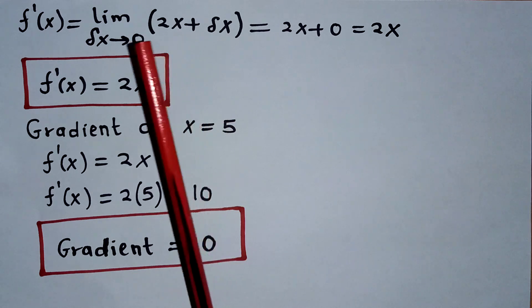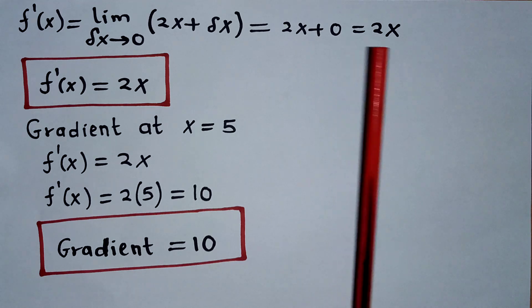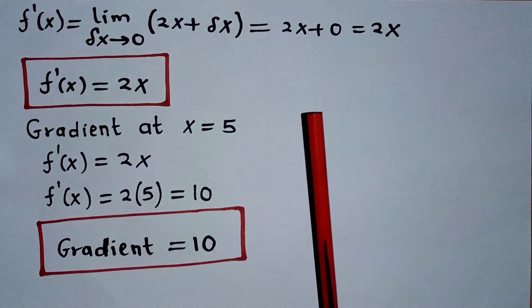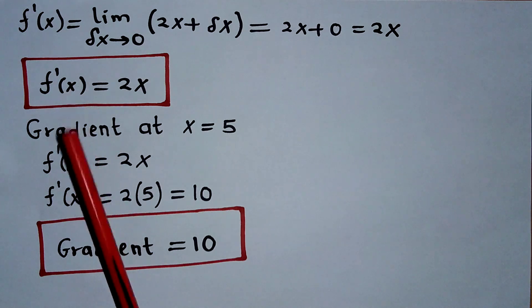So this is after simplifying, which is equivalent to: I'm going to replace the value of the small change in x with 0. So this will be 2x + 0, which is equivalent to 2x. And that will be the answer to the derivative for function x.